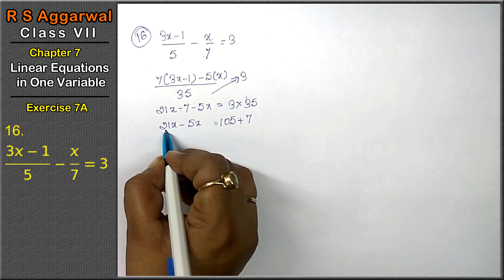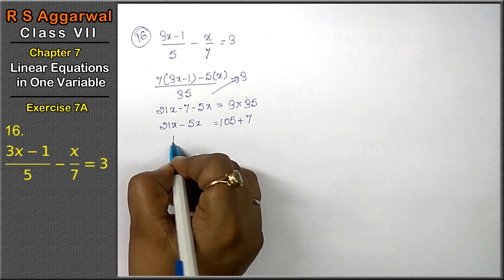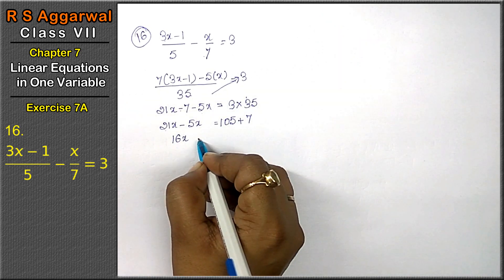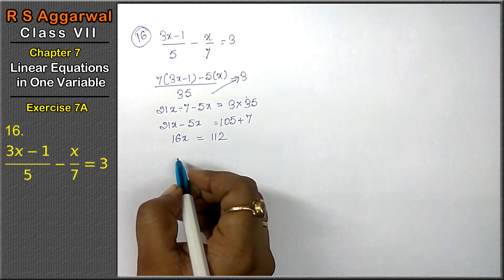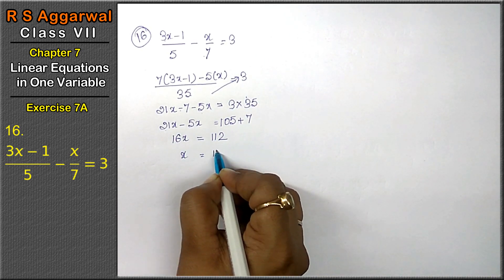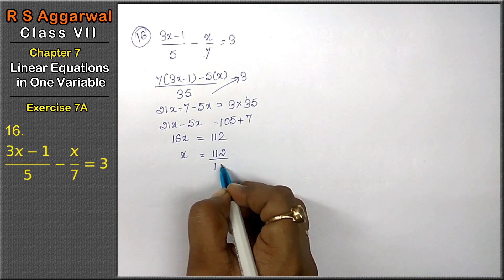Now, 21x minus 5 is 16x equals to 112. x equals to 112 divided by 16.